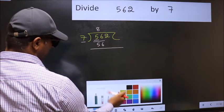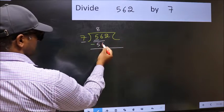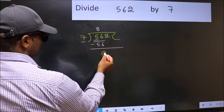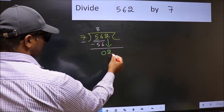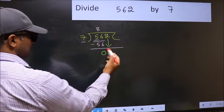Now you should subtract. 56 minus 56, 0. After this, bring down the beside number. So 2 down. After this step, the mistake happens.